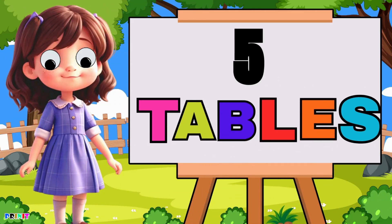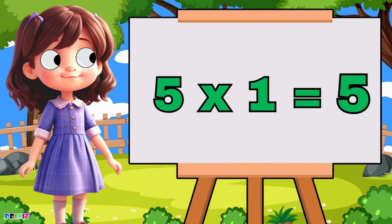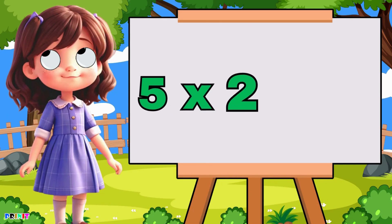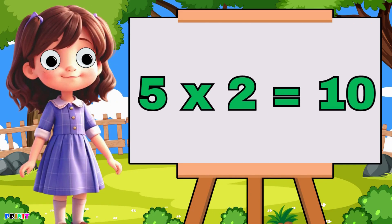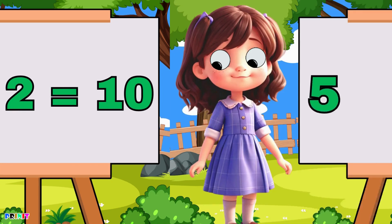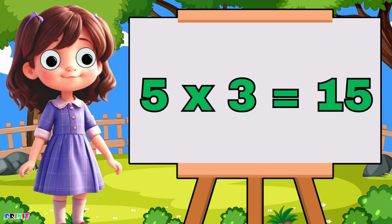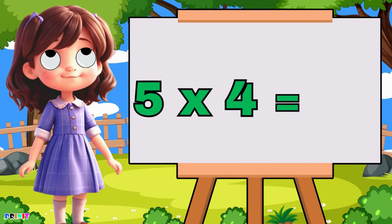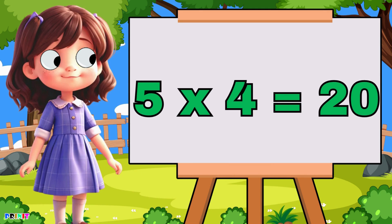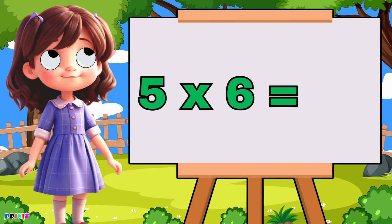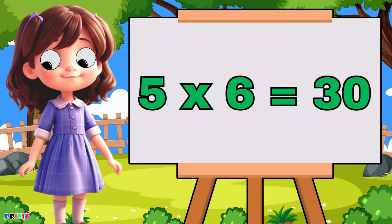Five tables. Five one's are five, five twos are ten, five threes are fifteen, five four's are twenty, five five's are twenty-five, five six are thirty.